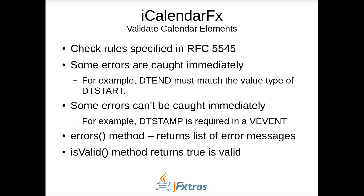iCalendarFX can validate calendar elements to ensure they comply with the rules specified in RFC 5545. Some errors are caught immediately and an exception is thrown. For example, the value type of a DateTimeEnd property must match the value type of a DateTimeStart property — an attempt to set DateTimeEnd to an invalid type results in an exception. However, some errors can't be caught immediately. For example, a DateTimeStamp property is required in a vEvent, but a new vEvent is allowed to be created without a thrown exception. So this kind of error is provided only when running the errors method, which returns a list of the error messages. The isValid method returns a boolean — true if valid, false otherwise.